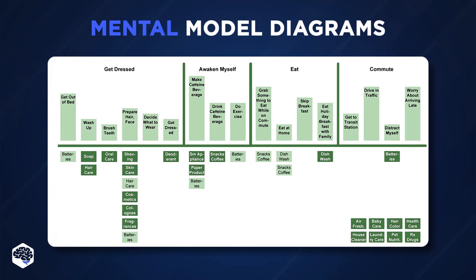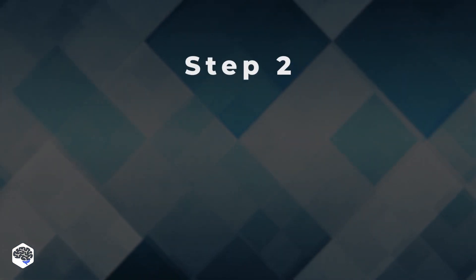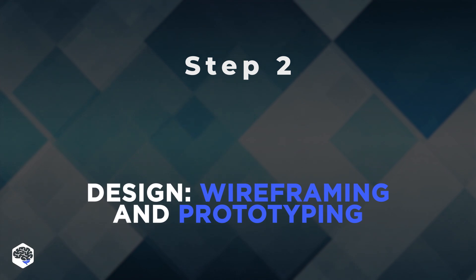Mental Model Diagrams describe the user's behavior, motivations, needs, and risks. The main stage is design, wireframing, and prototyping.